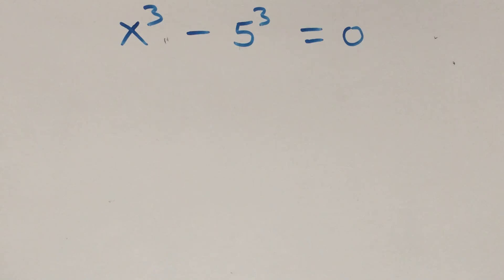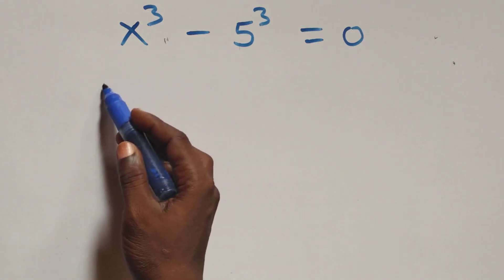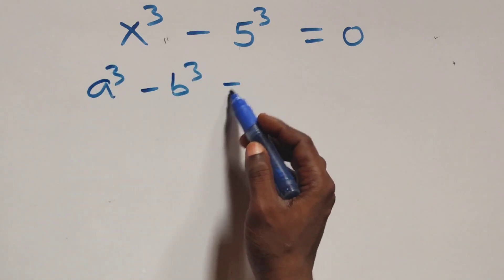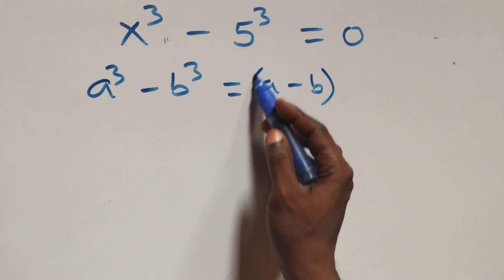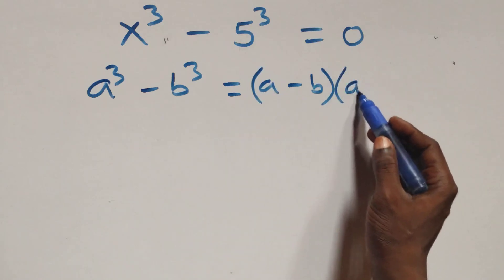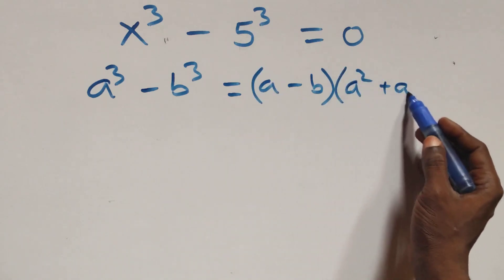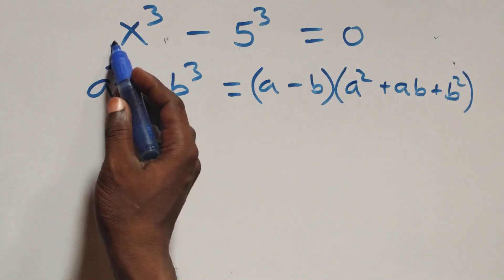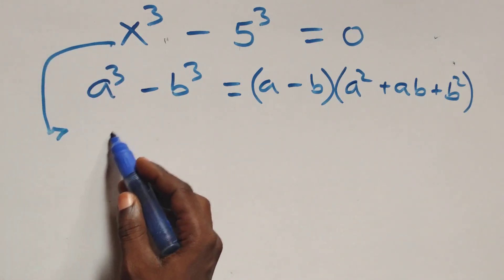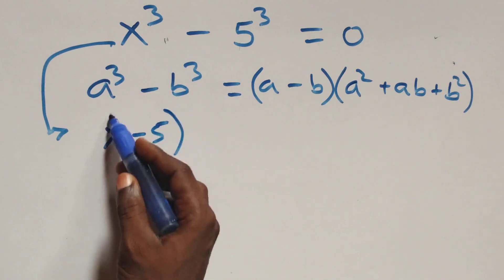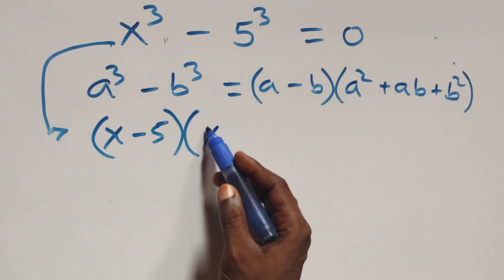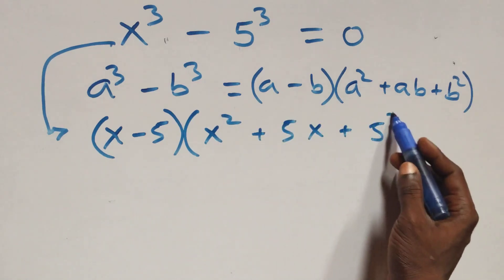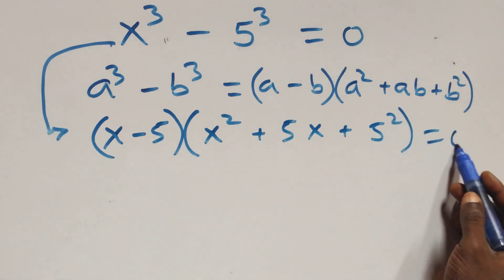Solving from the second case — x cubed minus 5 cubed equals 0 — this also follows: when we have a cubed minus b cubed, that is the same thing as a minus b in brackets, times a squared plus ab plus b squared. So what we have becomes x minus 5 in brackets, times x squared plus 5x plus 5 squared, equals to 0.